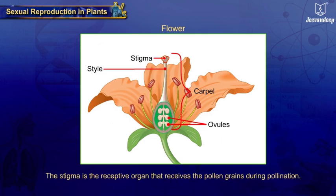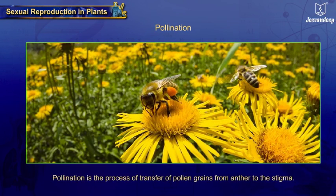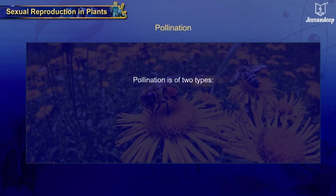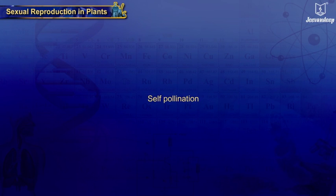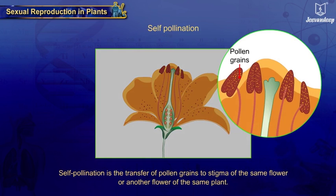The stigma is the receptive organ that receives the pollen grains during pollination. Pollination is the process of transfer of pollen grains from anther to the stigma. Pollination is of two types. Self-pollination is the transfer of pollen grains to the stigma of the same flower or another flower of the same plant.